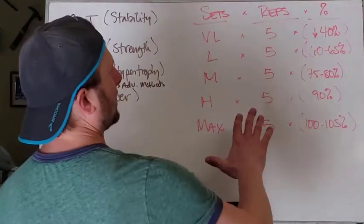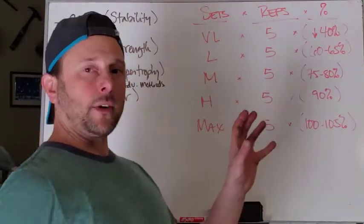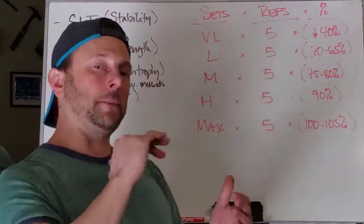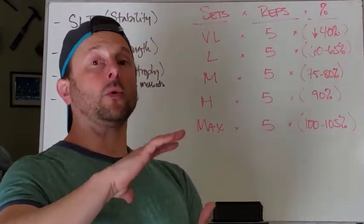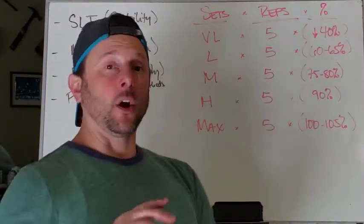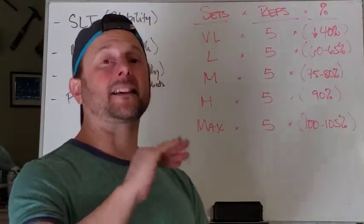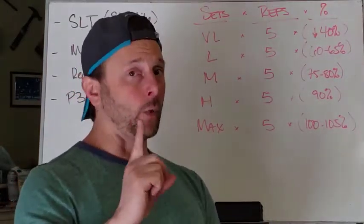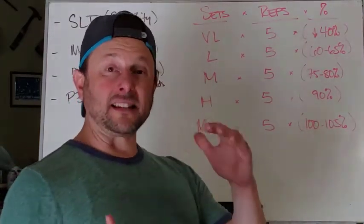So taking this, we're going to say that the reps are five. So what we're going to do is we are going to program this so that every set we do is basically a ramp up set that builds into our max effort set. What we're building up toward is one all out maximum effort set, just one. And that one set is where we're going to try to increase our strength.